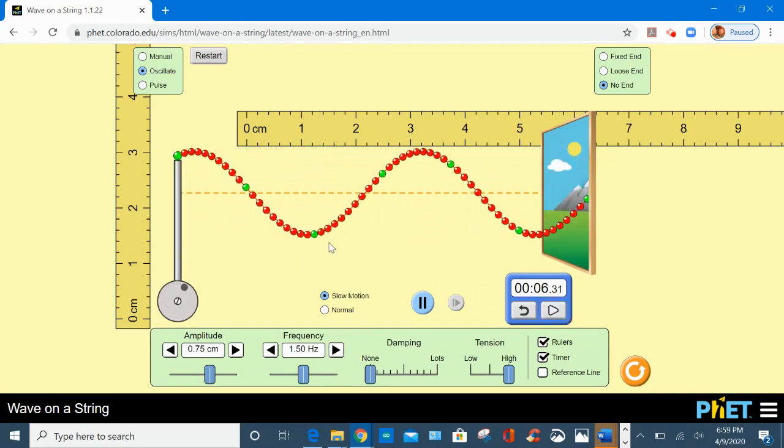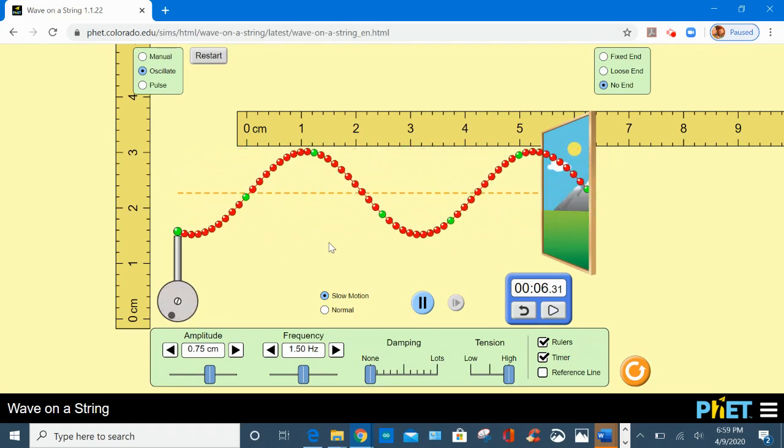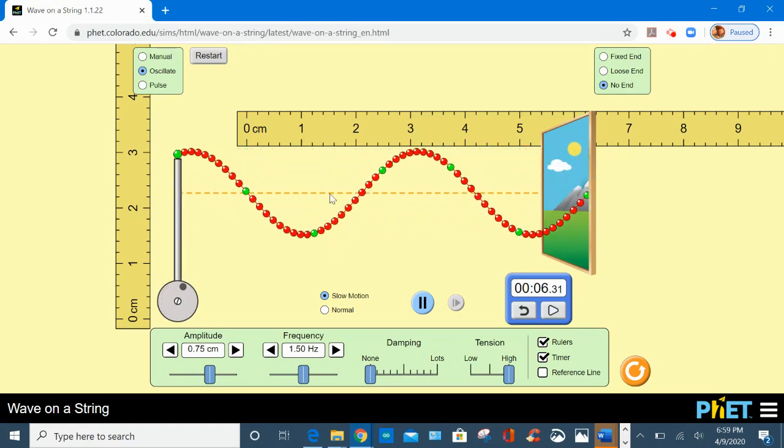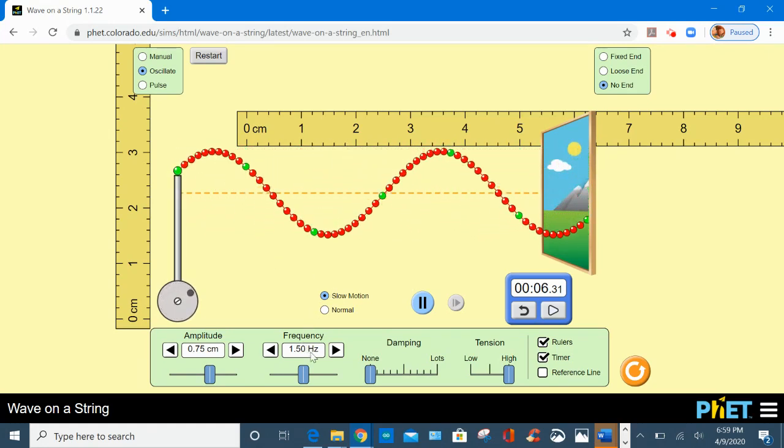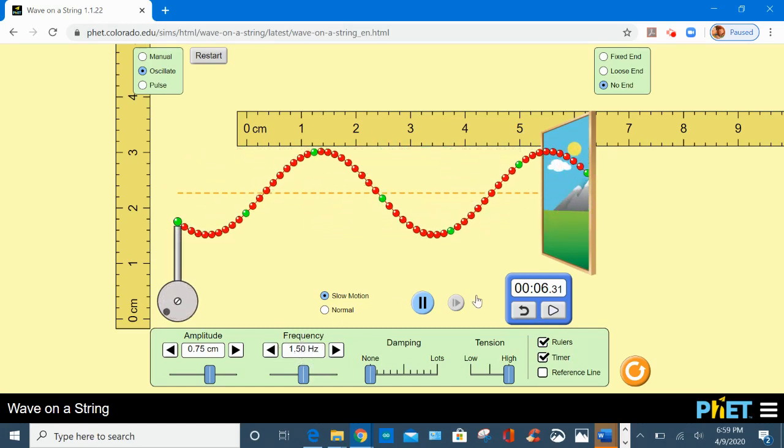Okay, so now I am going to divide 10 by 6.31. So my number is 1.58 hertz, so it is pretty close with this number.